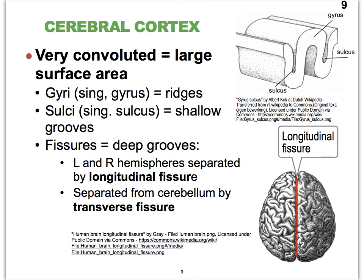Before we talk about the complex functions of the cerebral cortex, let's get more acquainted with its anatomy. The cerebral cortex is very wrinkly — that large brain had to fit into a relatively small skull, so our brains evolved to become very wrinkly. The small invaginations are referred to as sulci (singular: sulcus), while the bumps between two consecutive sulci are called gyri (singular: gyrus). Sometimes we see very deep grooves, and we call those fissures. For instance, the two cerebral hemispheres are separated by a longitudinal fissure.